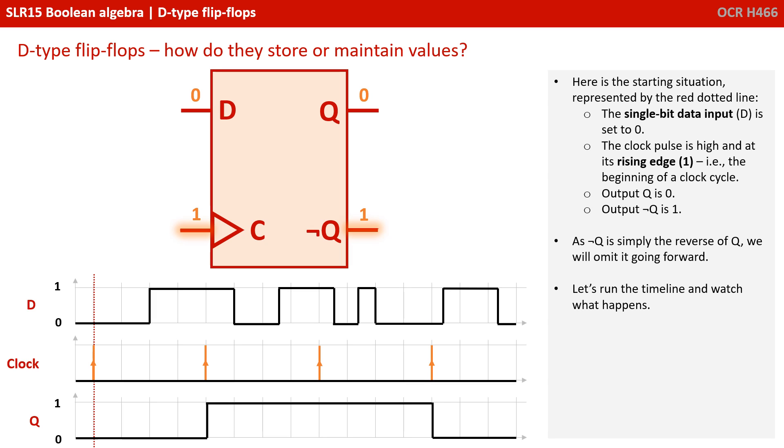Here's the starting situation, represented by the red dotted line on our shared timelines down the bottom. The single-bit data input D is set to 0. The clock pulse is high and at its rising edge, 1, i.e. the beginning of a clock cycle. Output Q is 0, and output not Q is 1.